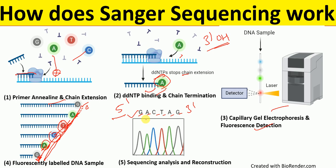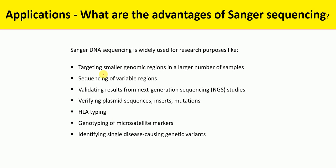What are the applications of Sanger sequencing? Sanger sequencing has been widely used in research for targeting smaller genomic regions in a large number of samples, sequencing of variable regions, validating results from next-generation sequencing studies, verifying plasmid sequences, inserts, and mutations, HLA typing, genotyping of microsatellite markers, and identifying single disease-causing genetic variants.